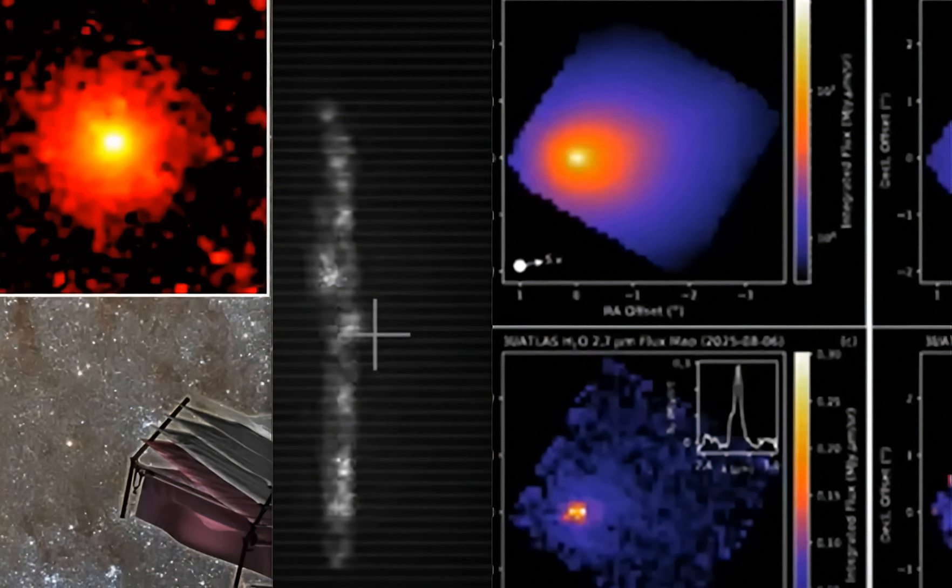Now, the information they have put out there already was that they believe that this has some sort of internal light source that's giving off this light. They said that it would have to be over 12 miles long if it was reflecting light. And now, they've used some of their instruments to see exactly what it's off-gassing.